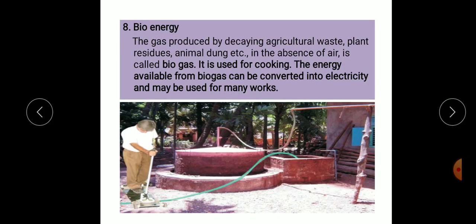Next is bioenergy. The gas produced by decaying agricultural waste, plant residues, animal dung, etc., in the absence of air, is called a biogas plant. It is used for cooking. The energy available from biogas can be converted into electricity and may be used for many works.